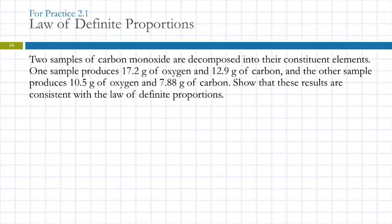So let's apply that. Two samples of carbon monoxide are decomposed into their constituent elements. One sample produces 17.2 grams of oxygen and 12.9 grams of carbon. The other produces 10.5 grams of oxygen and 7.88 grams of carbon. Random numbers. Show that these results are consistent with the law of definite proportions. So it says these are two samples of carbon monoxide. They're supposedly two samples of the same compound. The law of definite proportions says the ratio of the mass of oxygen to carbon should be the same for both samples. Now we can't just look at these numbers. I can't do that math in my head. So we have to actually get out our calculators and do some dividing here.